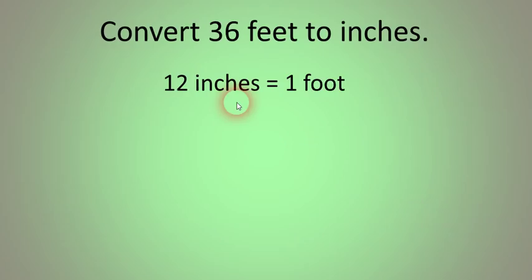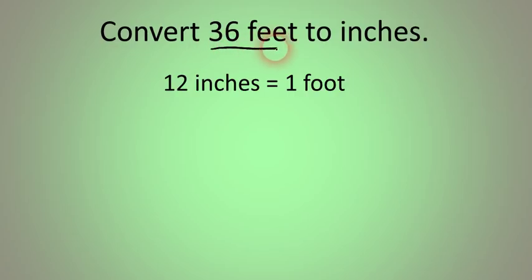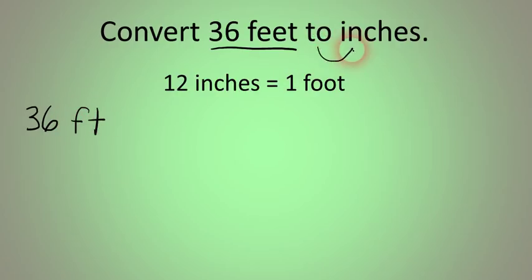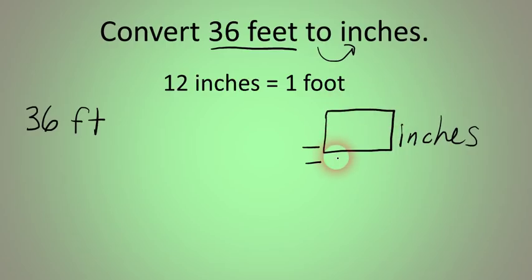Let's try a couple of examples together. We're going to start with this: convert 36 feet to inches. If you look at 12 inches equals 1 foot, sometimes students will try to do this in their head and say 36 divided by 12 is 3, so it must be 3 inches. But actually that's not the right answer, and that emphasizes one of the reasons why we do this process. By carrying out dimensional analysis, you won't make the mistake of multiplying when you're supposed to divide, or vice versa. Always write down what's given to you first — so we write down the 36 feet — and at the very end put an equal sign and inches, with a little box for the final answer.